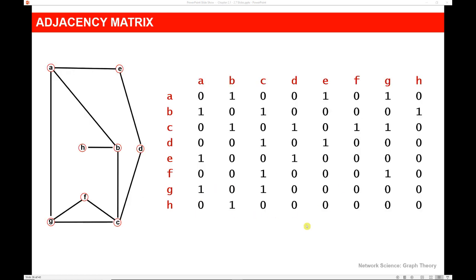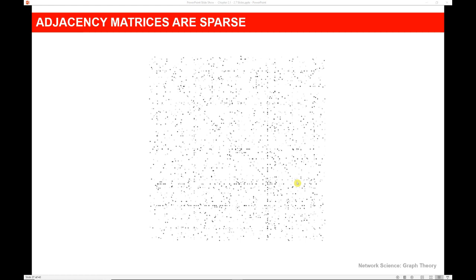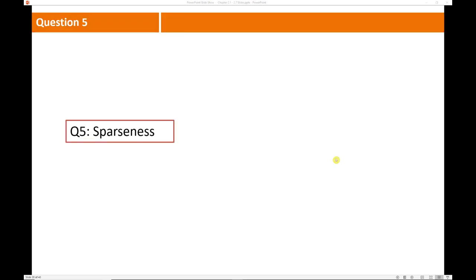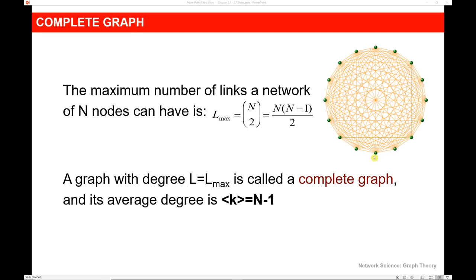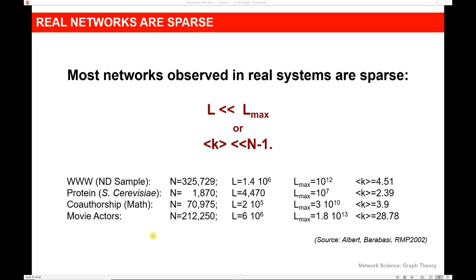Here is a larger example of an adjacency matrix — the matrix gets larger the more nodes you have in the network. Most adjacency matrices are sparse, meaning that there aren't a lot of ones because there aren't really that many connections in the graph. Typically you don't have complete graphs where everybody is connected to every other person, so real networks are sparse. On the right, we have an example of a complete graph — if you choose a node, that node is going to be connected to every other node. You can use a formula to calculate the total number of edges in a complete graph, and the average degree can be calculated as one minus the total number of nodes.